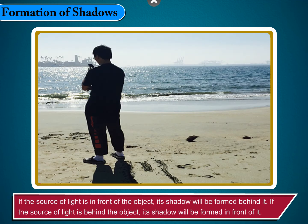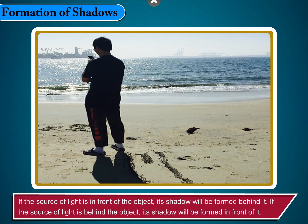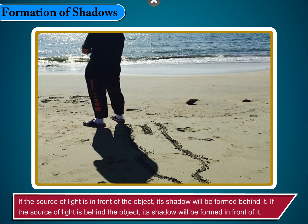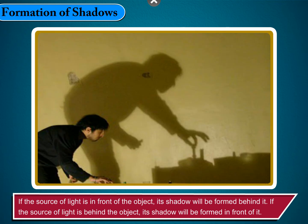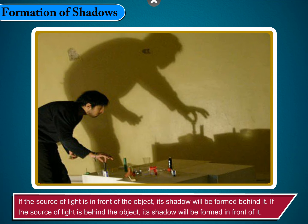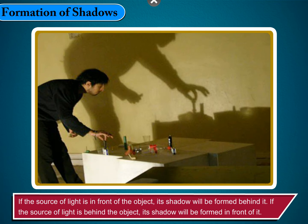If the source of light is in front of the object, its shadow will be formed behind it. If the source of light is behind the object, its shadow will be formed in front of it.